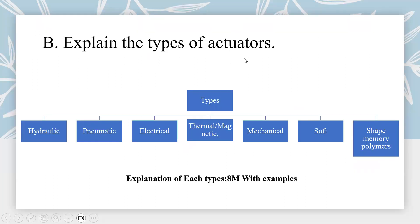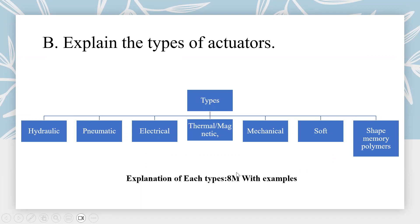Next, explain the types of actuators. You can write what an actuator is first for 4 marks, and then write the types of actuators: hydraulic, pneumatic, electrical, thermal and magnetic, mechanical, soft, shape memory, and polymer. Each of these types should be completely explained with examples. For example, for hydraulic actuators, write what they are and what their applications are. Complete explanation with examples will be given 8 marks.